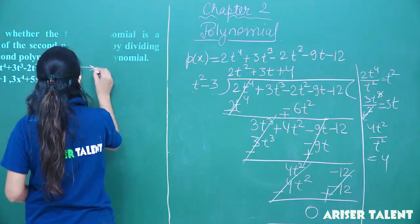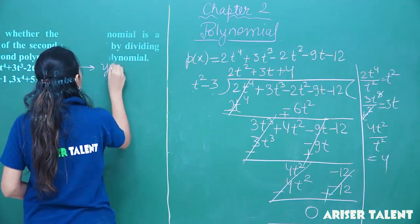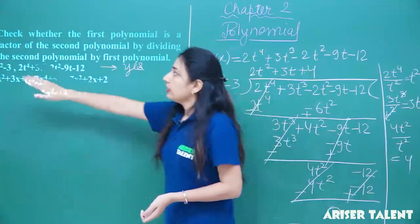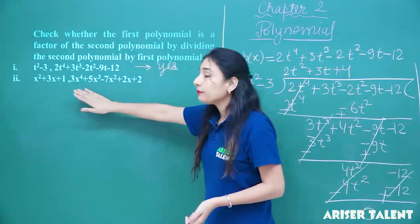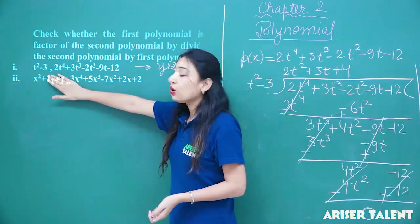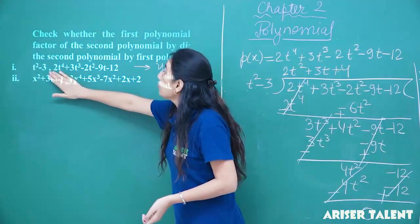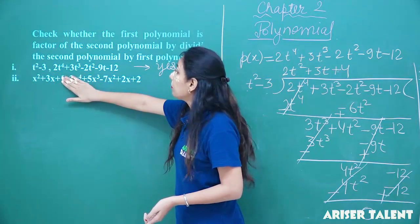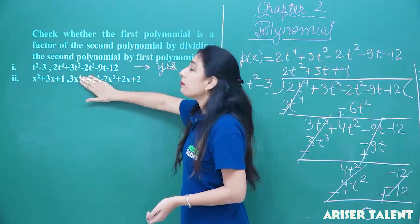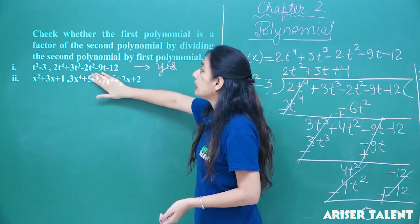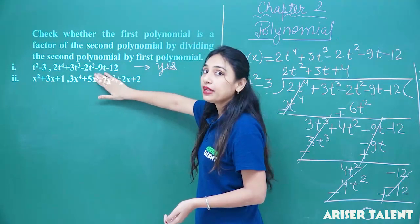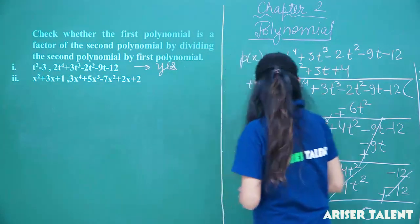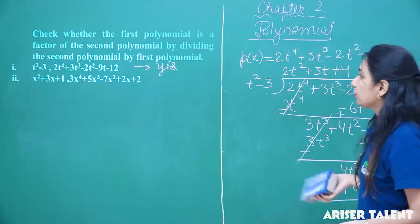Since the remainder is 0, we can confirm that t squared minus 3 is a factor of 2t to the power 4 plus 3t cubed minus 2t squared minus 9t minus 12. Let us move to the next question.